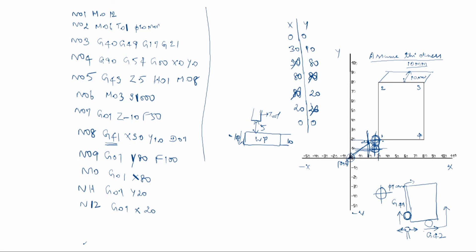After reaching X20 Y20, the path ends back at 0,0. Since Z is at minus 10 we must move the tool up. N13: G00, Z10 — rapid mode, the tool comes up. N14: G40, X0, Y0 — cancel the cutter compensation, so G40 is used here with X0 Y0; the cutter compensation is now cancelled.